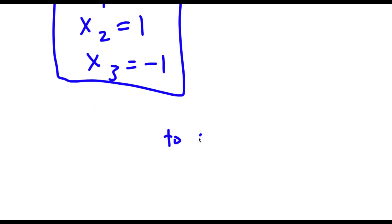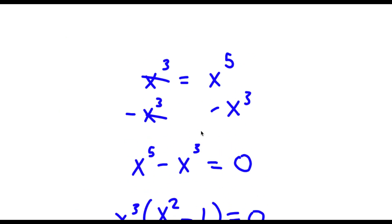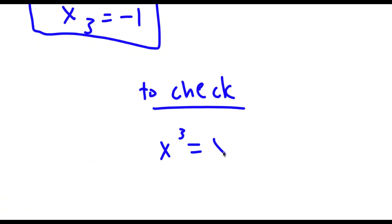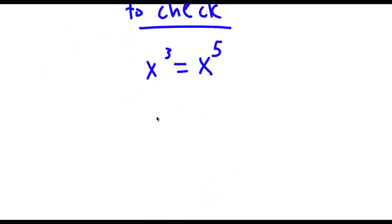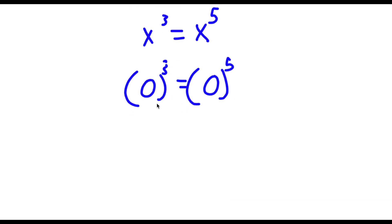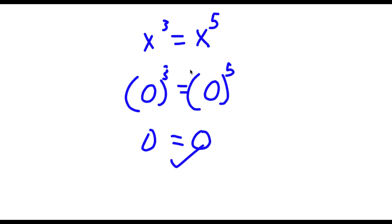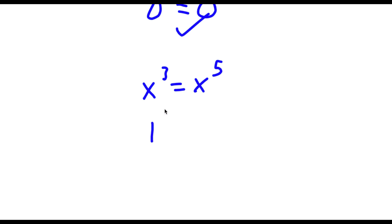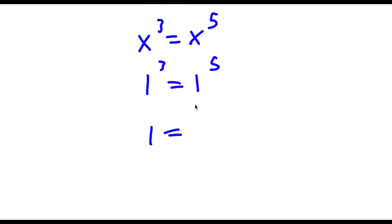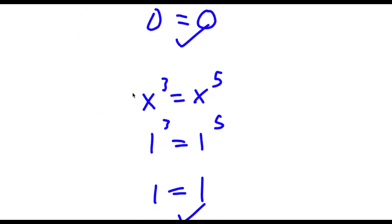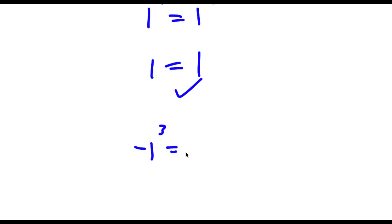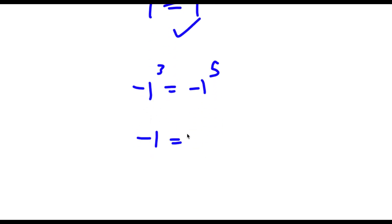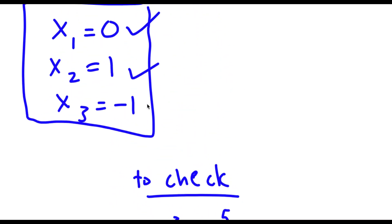So now to check — my original equation was x to the power of 3 is equal to x to the power of 5. Let's first check 0: 0 to the power of 3 is equal to 0 to the power of 5, both equal 0, so 0 works. Now let's try 1: 1 to the power of 3 is equal to 1 to the power of 5 — both equal 1, so this works as well. Finally, we have negative 1: negative 1 to the power of 3 is negative 1, and negative 1 to the power of 5 is negative 1, so this works as well. So these are my three solutions to this problem.